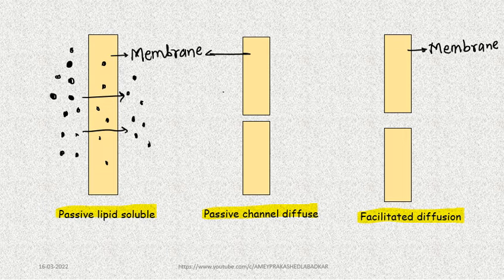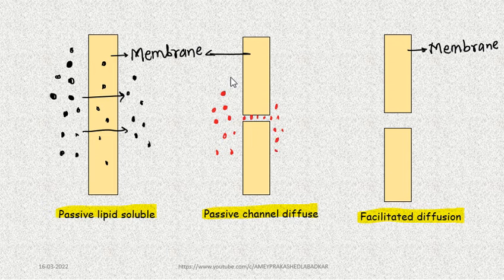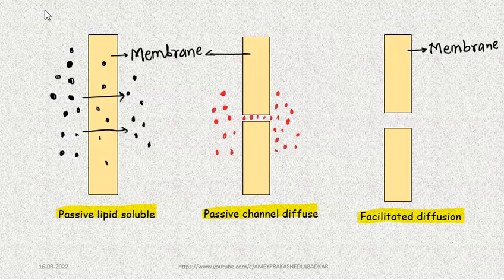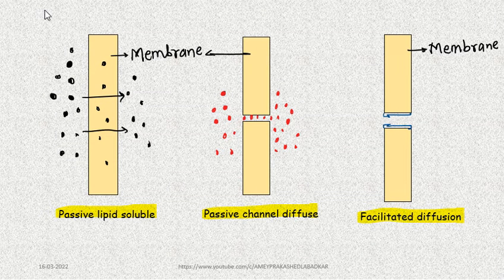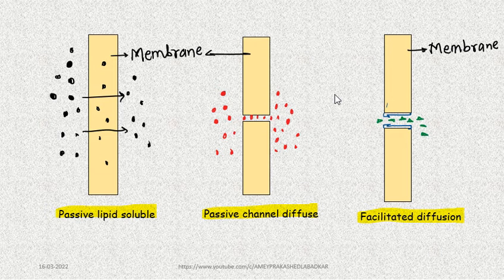In passive channel diffusion, the transfer of particles and substances takes place through facilitated spatial regions provided by the membrane. In facilitated diffusion, specialized structures such as gated channels or proteins are present on the membrane, and through these, substances move across the membrane from the outer side to the inner side.